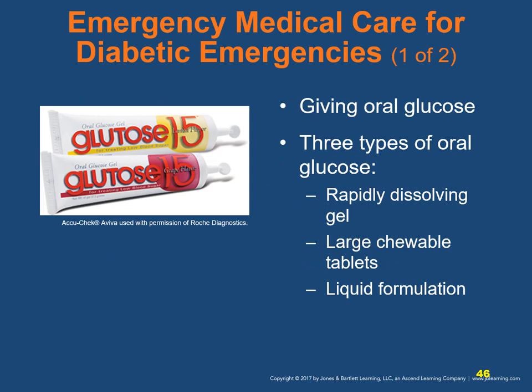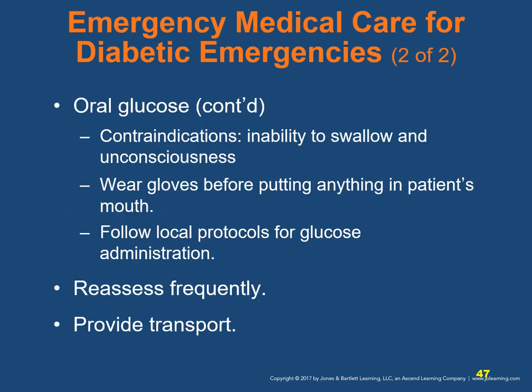For emergency medical care for diabetic emergencies, there are three types of oral glucose preparations available commercially: a rapidly dissolving gel, large chewable tablets, and a liquid formulation. The only contraindications are the inability to swallow and unconsciousness, as aspiration can occur. Wear gloves before putting anything in the patient's mouth. Follow local protocols for glucose administration. Reassess the patient frequently — you may see rapid response or rapid deterioration. Provide transport to the next level of care.